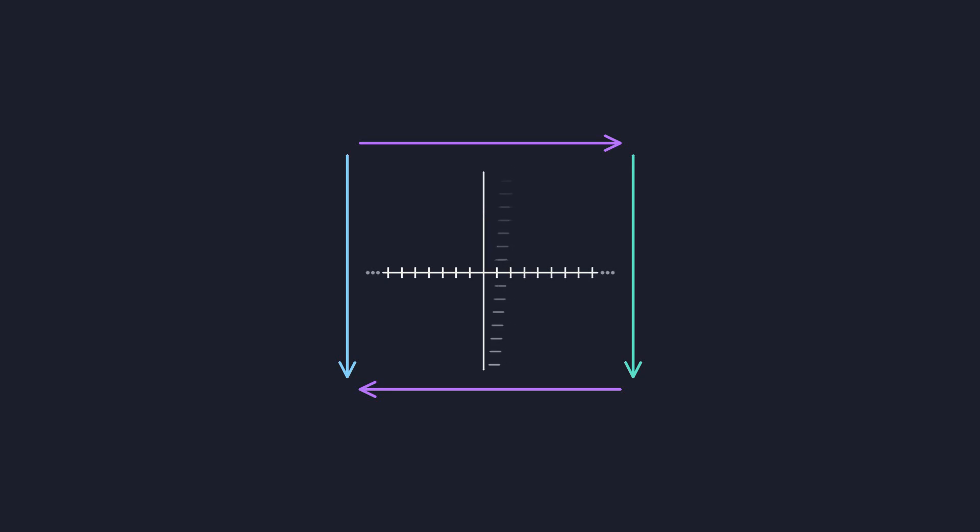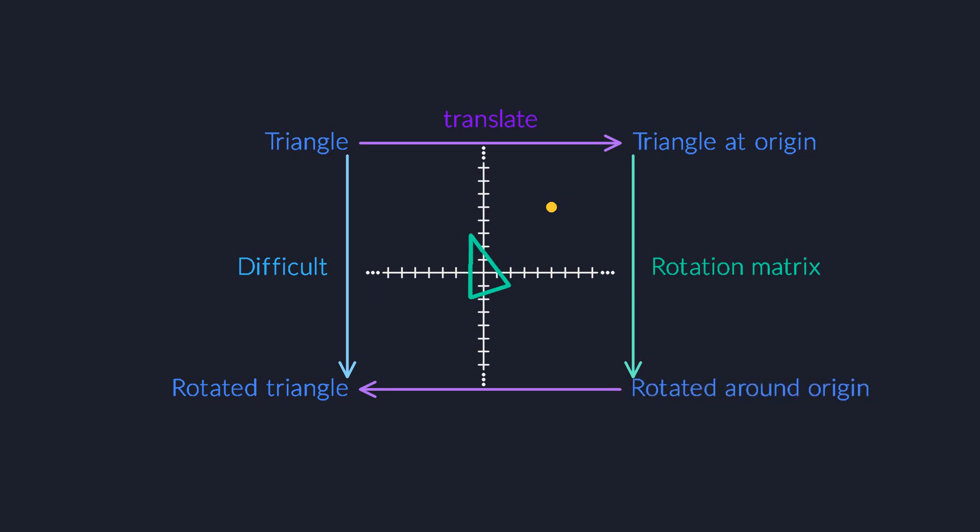Do you need to rotate an object around a given point? Move the object to the origin first. Rotating around the origin is easy. There's a matrix for that. Then move back. Et voila! Once you start looking for this pattern you see it everywhere.